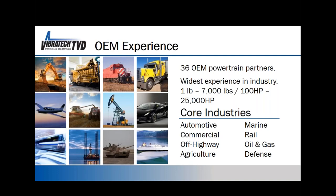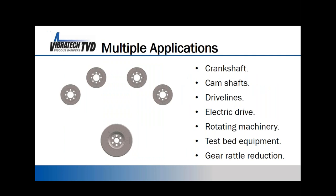Vibratech TVD has about 36 powertrain partners worldwide across automotive, commercial, off-highway, agriculture, marine, rail, oil and gas, and defense industries. We claim the widest experience in the industry for damper manufacturing — from a one-pound cam damper up to a 7,000-pound crankshaft damper for gas compression engines, ranging from 100 to 25,000 horsepower. Dampers can be used on the crankshaft, camshafts, driveline, electric drives, rotating machinery, testbed equipment, and for gear rattle reduction.